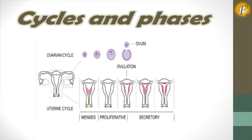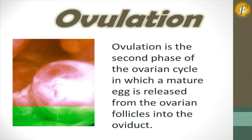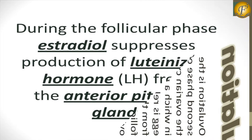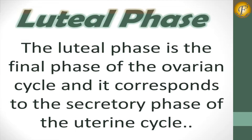Ovulation is the second phase of the ovarian cycle, in which a mature egg is released from the ovarian follicles into the oviduct. During the follicular phase, estradiol suppresses production of luteinizing hormone (LH) from the anterior pituitary gland.